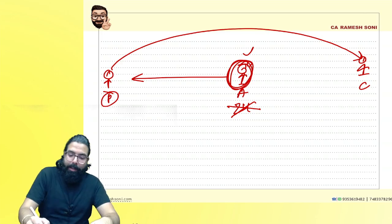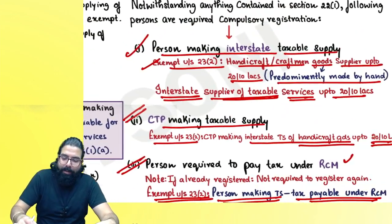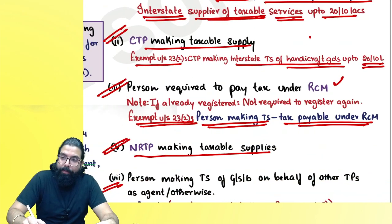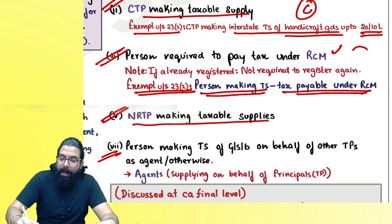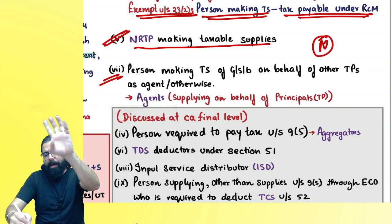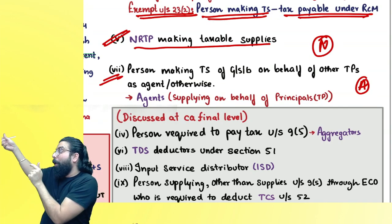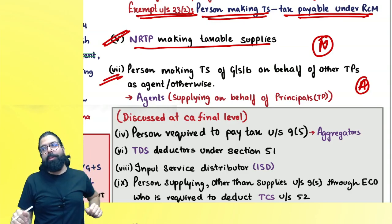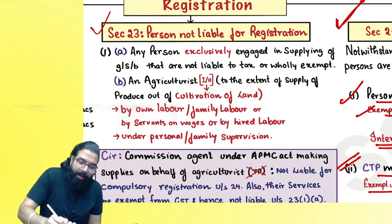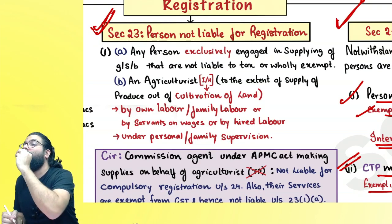To summarize who are the people required compulsory registration: (1) interstate supplier, (2) casual taxable person, (3) persons liable to pay tax under RCM, (4) NRTP, and (5) agent of a principal who is a taxable person. Now, section 23 talks about those people who are not required to take registration at all.